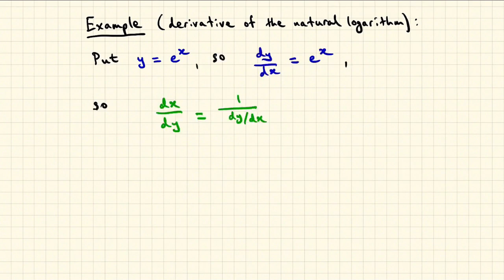We want information about the inverse function, so tip the derivative upside down, which both reverses the roles of x and y, and also reciprocates the derivative dy dx of the original exponential function. But this is just 1 over e to the x, which is 1 over y.